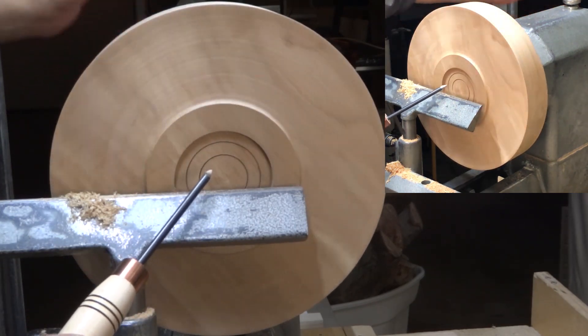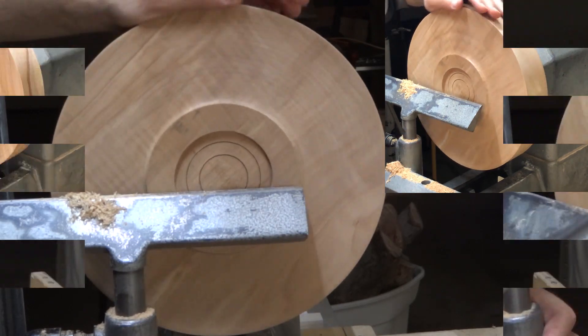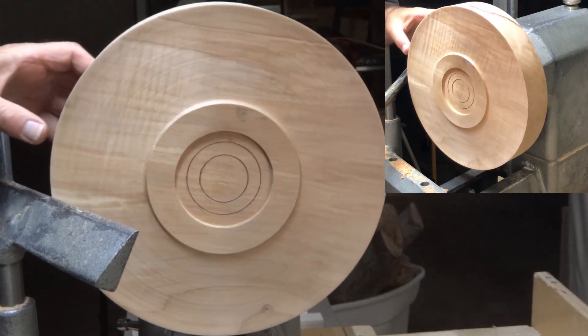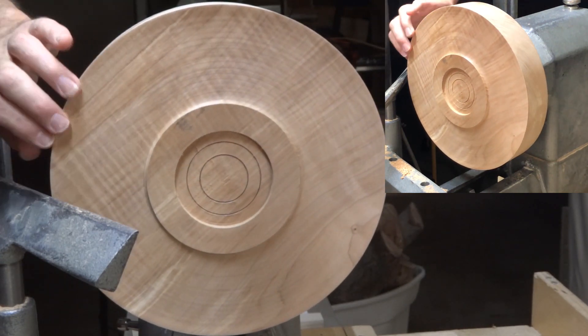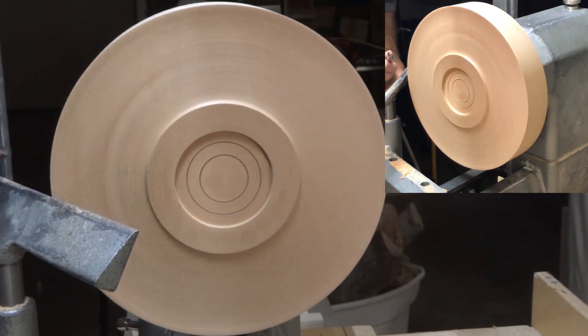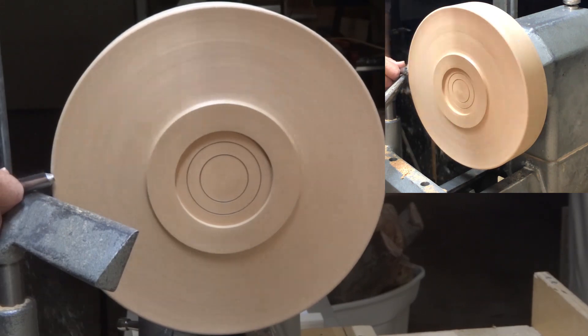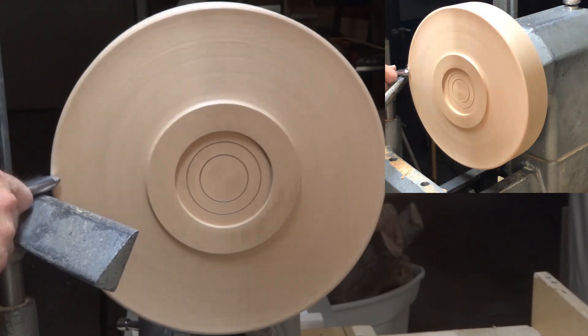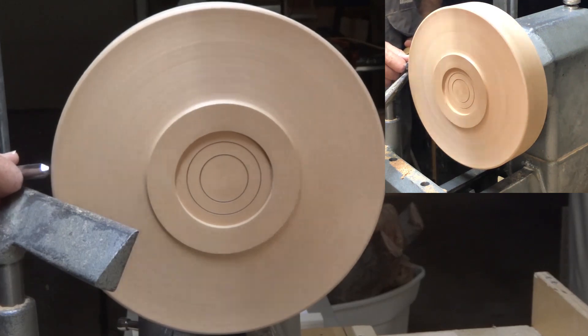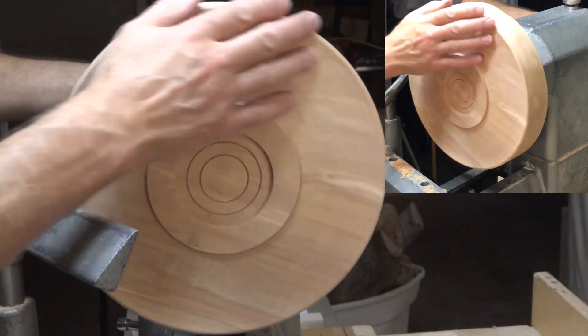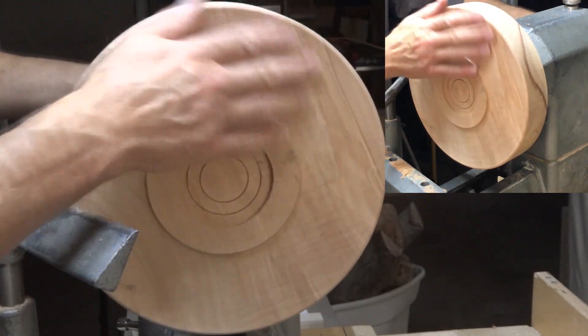That was the Cindy Drozda bead texture. I'm going to use this tool to make the rings. I'm just going to use my bowl gouge in a shear scraping mode to round this over a little bit. That just removed that sharp corner. Now the sanding.